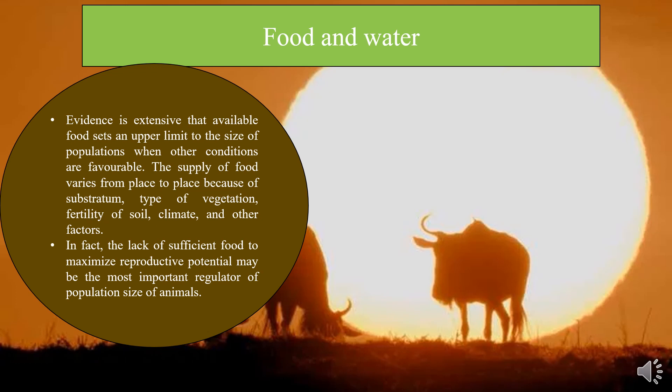If food is rare, animals have to spend considerable time finding it. And if it is of poor nutrient quality, then there may not be enough time available to eat a sufficient amount. Many observations show that when food is rare or of poor quality, animals reproduce less successfully than when food is abundant.